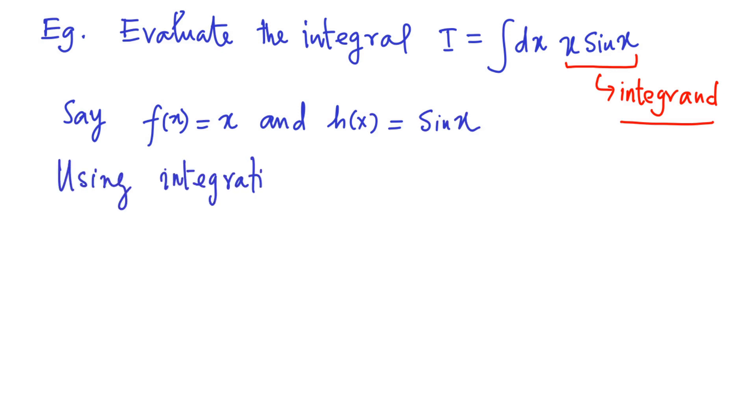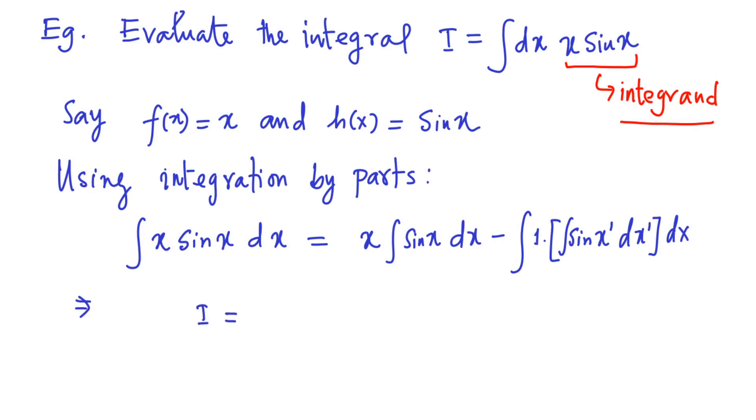Then using the expression of integration by parts, we can express x sin x dx as x times integral of sin x dx minus integration over 1 times integral of sin x dx, integrated over x. Now using the antiderivative of sin x and cos x, we can express the indefinite integral i as minus x cos x plus sin x plus c.